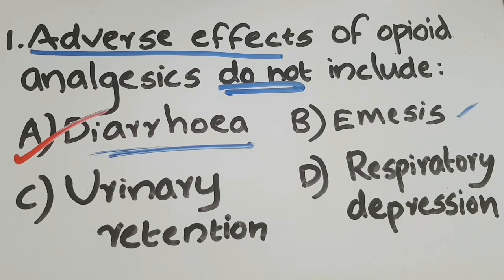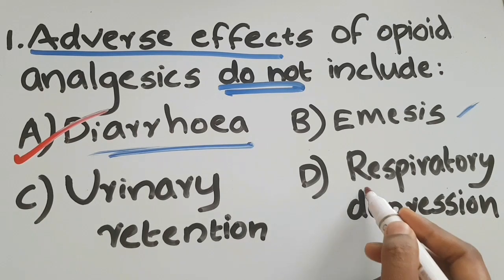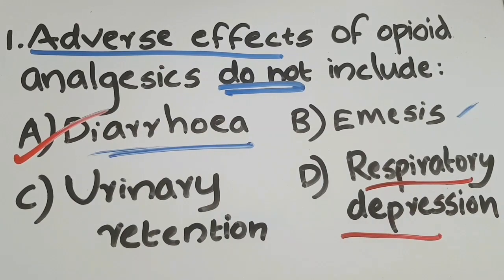So the correct answer is option A: diarrhea. Opioid analgesics usually cause constipation, not diarrhea. In cases of opioid toxicity, death may occur mainly due to respiratory depression.